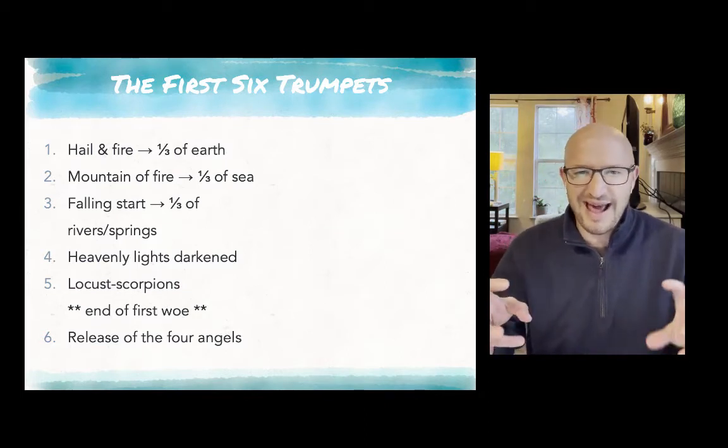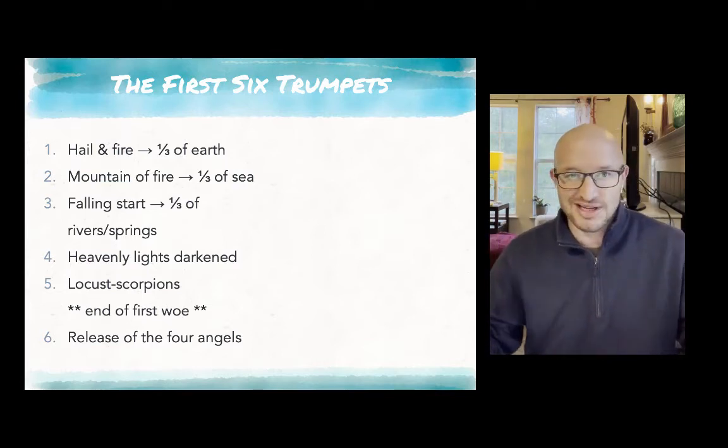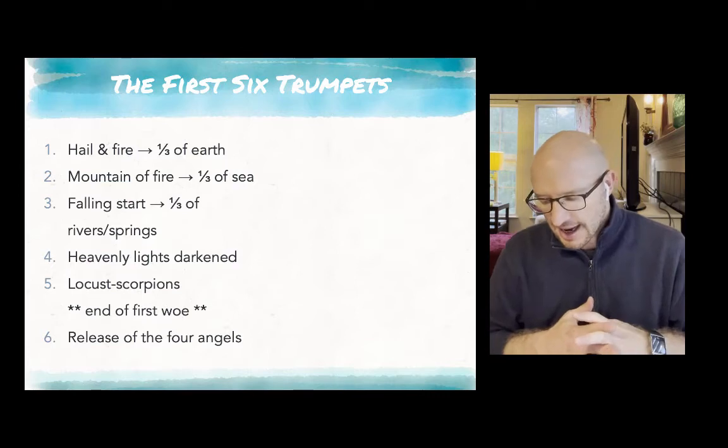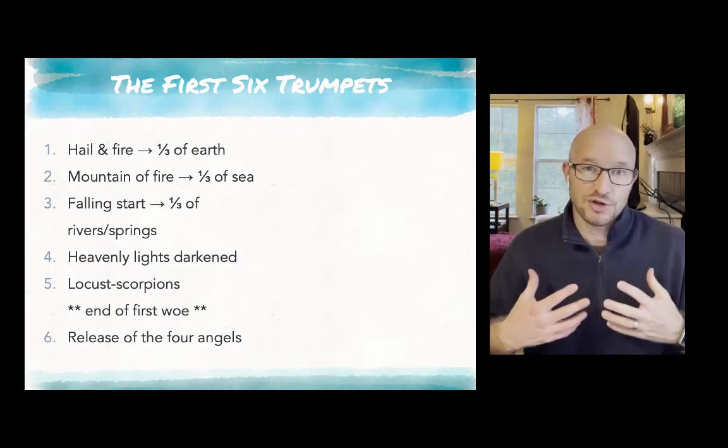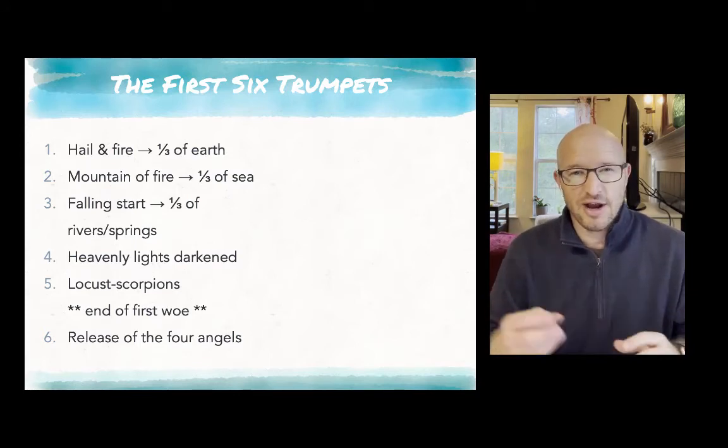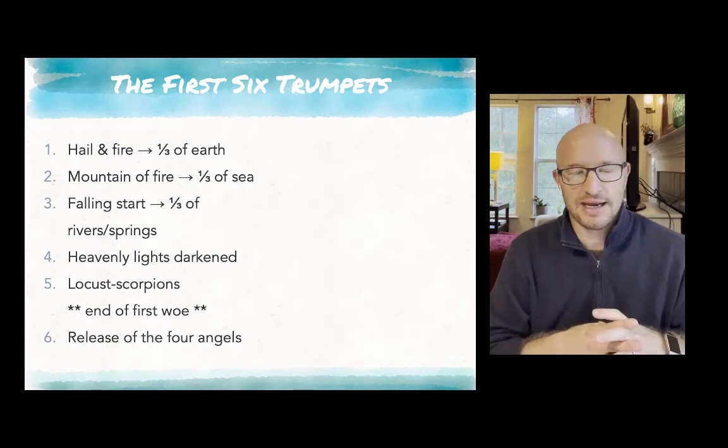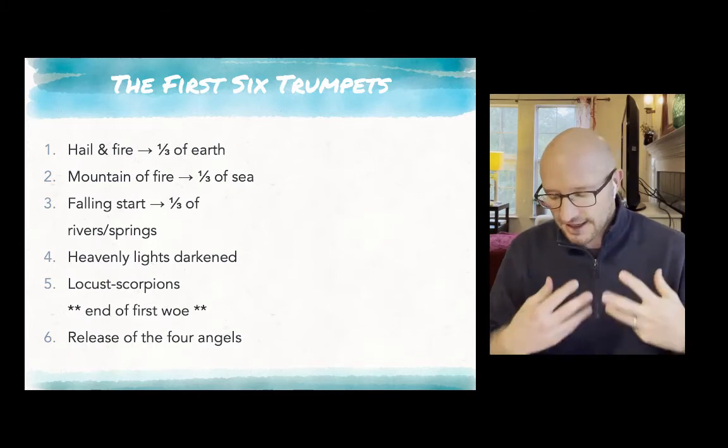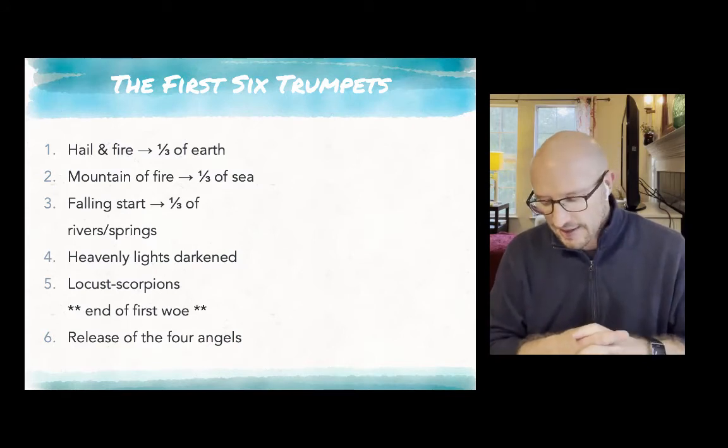And almost immediately the smoke turns into these locust-scorpions, these hybrid creatures that have human features and animal features and insect features. And these hybrid creatures are spread out on the earth and they torture humanity. They are able to wound and sting humanity but not kill humanity, again affecting it seems one third of the earth.